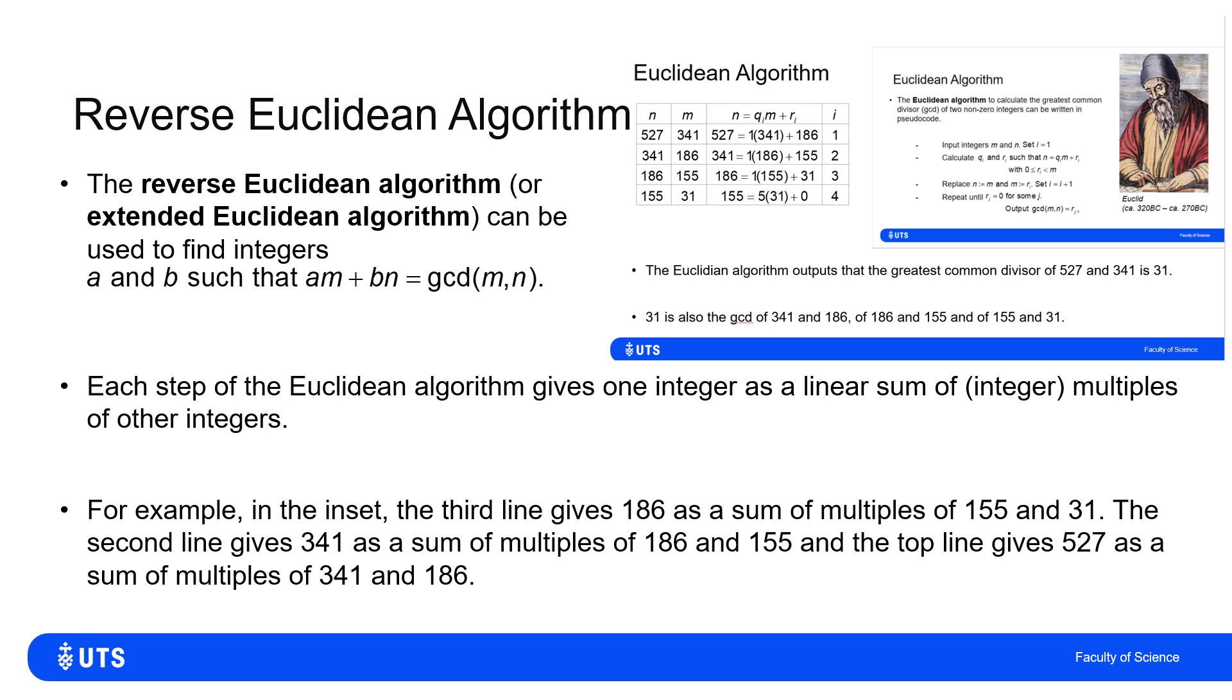Each line finds our greatest common divisor in terms of multiples of other numbers, so we just keep reversing the process till we get back to the top. The Euclidean algorithm each step works me down this table, and the reverse Euclidean algorithm will work me back up to the original m and n.